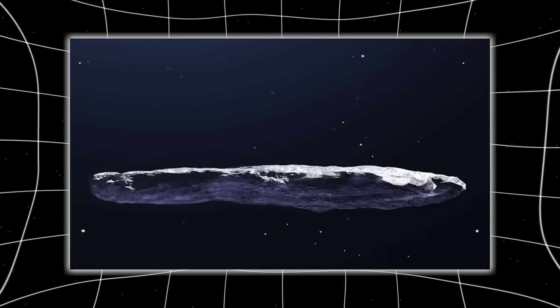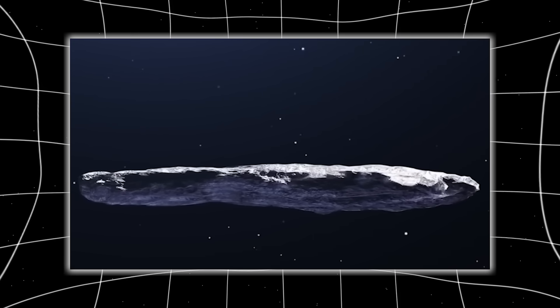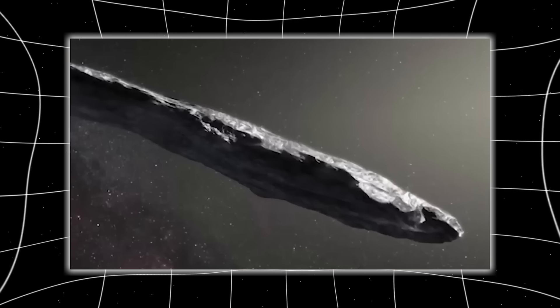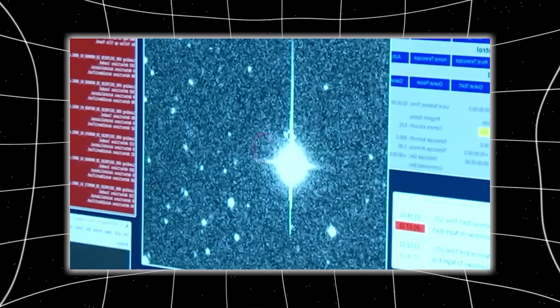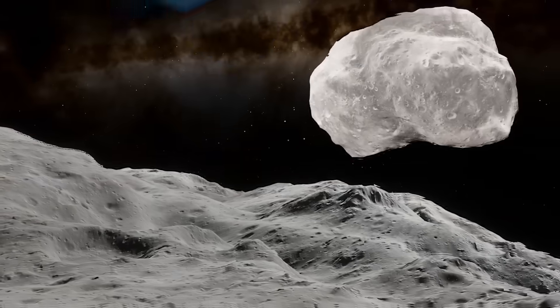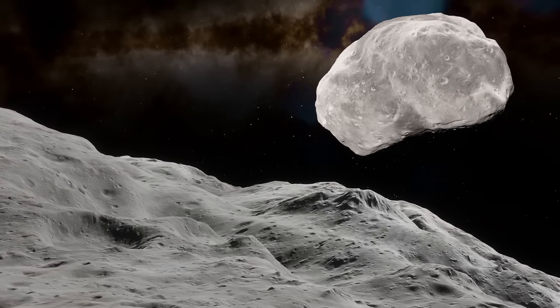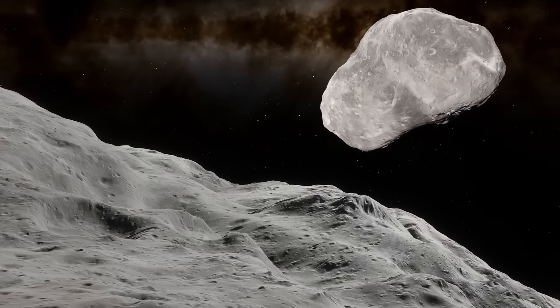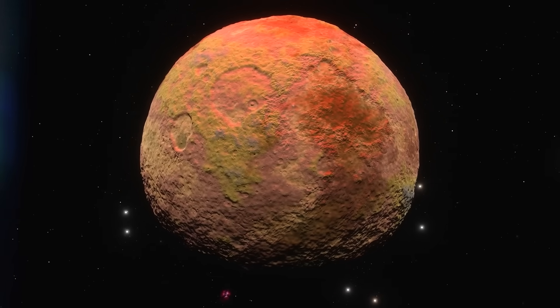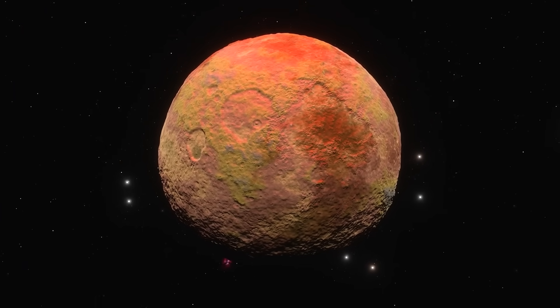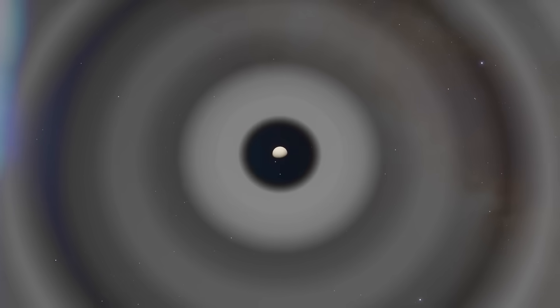Even more baffling, fluctuations in electromagnetic readings hinted at internal complexity, perhaps even cavities or layered density. Whatever this was, it wasn't a typical chunk of rock. And if it isn't a rock, what is it? That question began to echo from NASA's Jet Propulsion Lab to the European Southern Observatory to the classified halls of national defense agencies. Because if nature didn't make this thing, someone did.